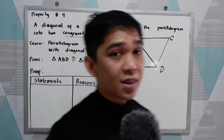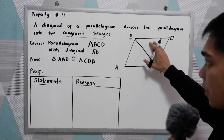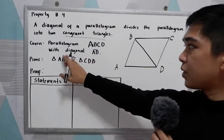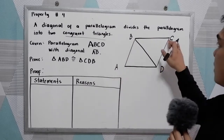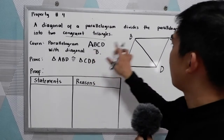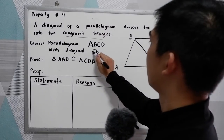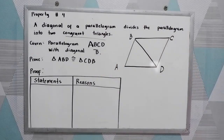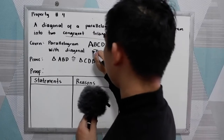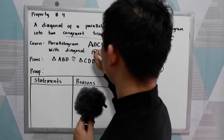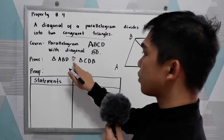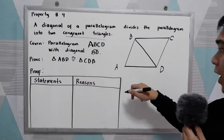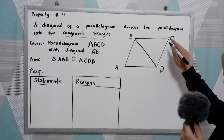So your task: given the parallelogram ABCD with diagonal BD, we're going to prove that triangle ABD is congruent to triangle CDB.